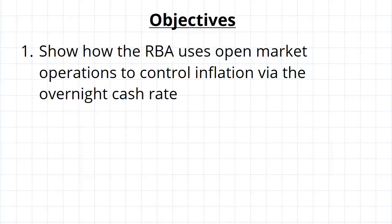G'day guys. Now we're going to use all the theory we've built up to show the actual mechanisms through which the RBA controls inflation. We're going to show how it uses open market operations to control it via the overnight cash rate.